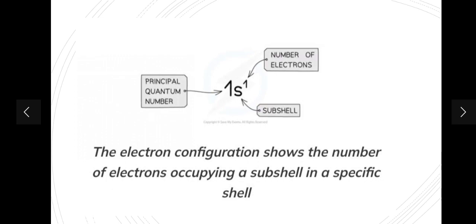Here you can see a diagrammatic snapshot showing how we can write the electronic configurations. There's an example: shell number one, energy level one — that's the principal quantum number n equals 1. Then we have the subshell represented by 's', and then we have the number of electrons. The s subshell can accommodate a maximum of two electrons, but in this case we have only one electron just as an example of how the electronic configuration looks.